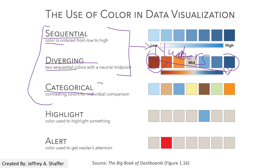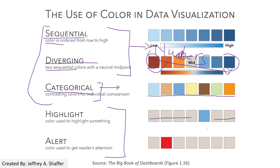The categorical data schema is used to represent categorical data — for example, different types of land use — using different hues for each category. Sometimes we also use a highlight or alert approach, where we put everything as gray or white as a background and use a cool or warm color to highlight the portion of the data we want to emphasize.